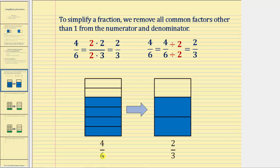So if we wanted to simplify four-sixths using the prime factorization method, we would write the prime factorization of four, which is two times two, and the prime factorization of six, which is two times three. Once we have both in prime factored form, we can see the common factors. Four and six share a common factor of two. Two over two simplifies to one, so these twos simplify to ones. The numerator is now one times two, or two, and the denominator is one times three, or three — giving us the simplified fraction of two-thirds.